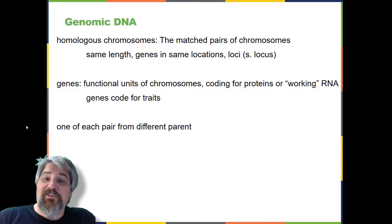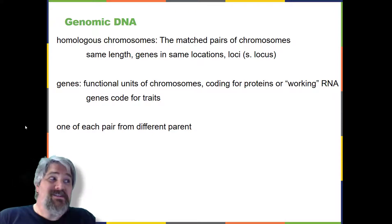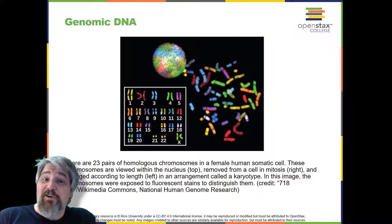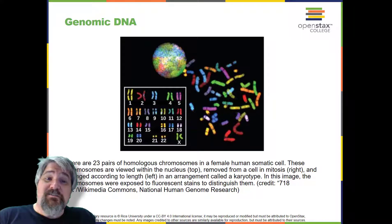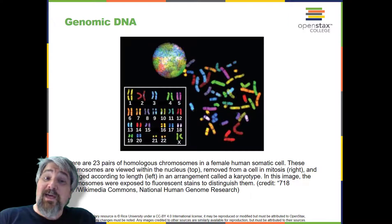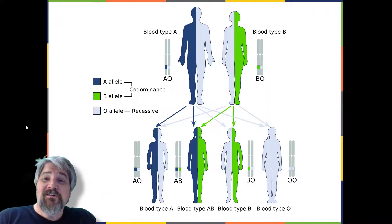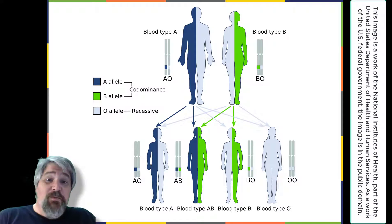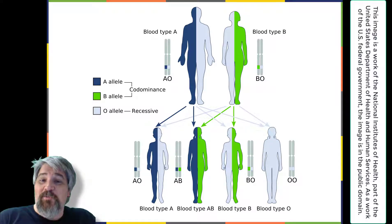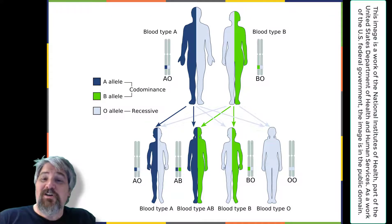Traits are the different forms of a characteristic. For example, the shape of earlobes is a characteristic with traits of free or attached. Each copy of the homologous pair of chromosomes originates from a different parent. Therefore, the copies of each of the genes themselves may not be identical. The variation of individuals within a species is caused by the specific combination of genes inherited from both parents. For example, there are three possible gene sequences on the human chromosome that codes for blood type: sequence A, sequence B, and sequence O. Because all diploid human cells have two copies of the chromosome that determines blood type, the blood type — the trait — is determined by which two versions of the marker gene are inherited.